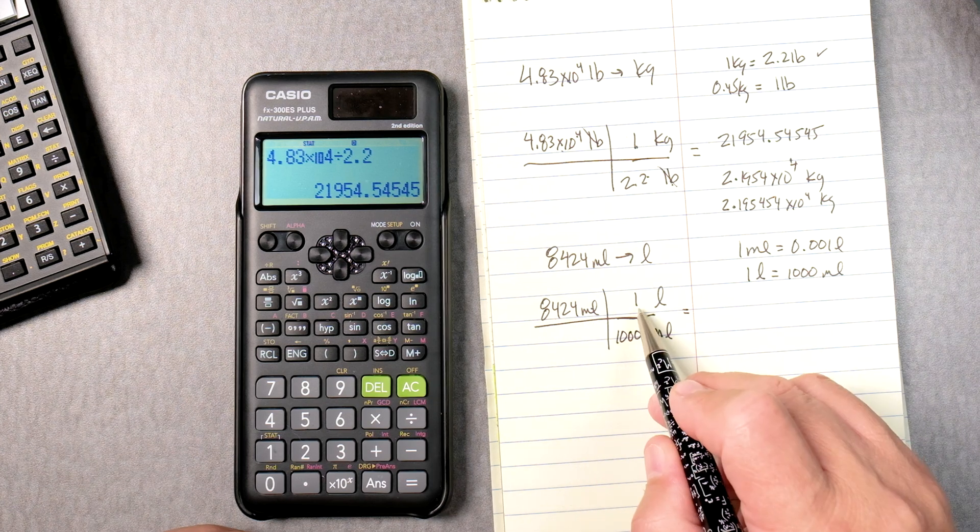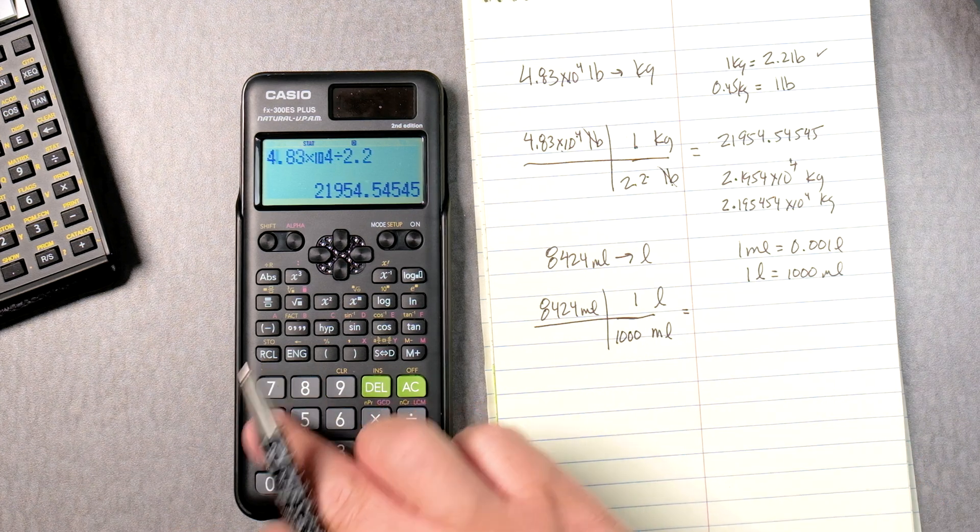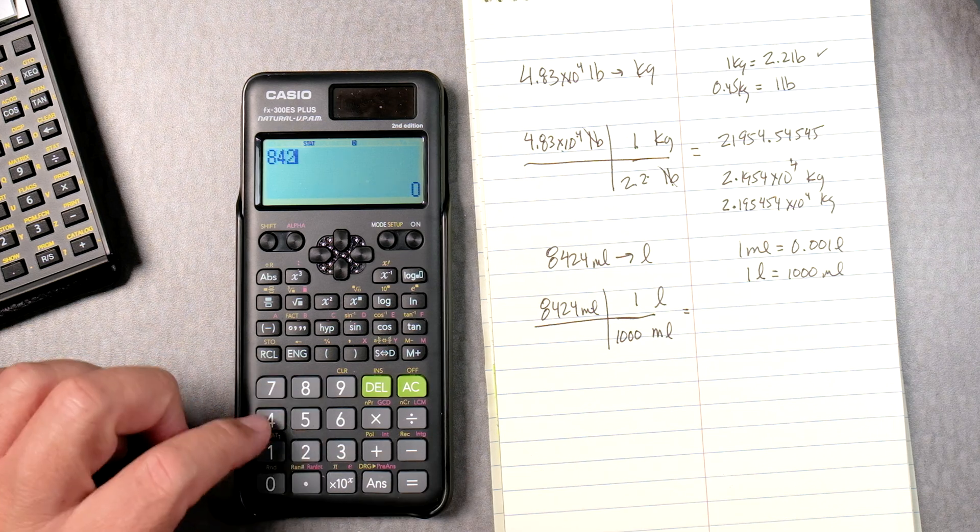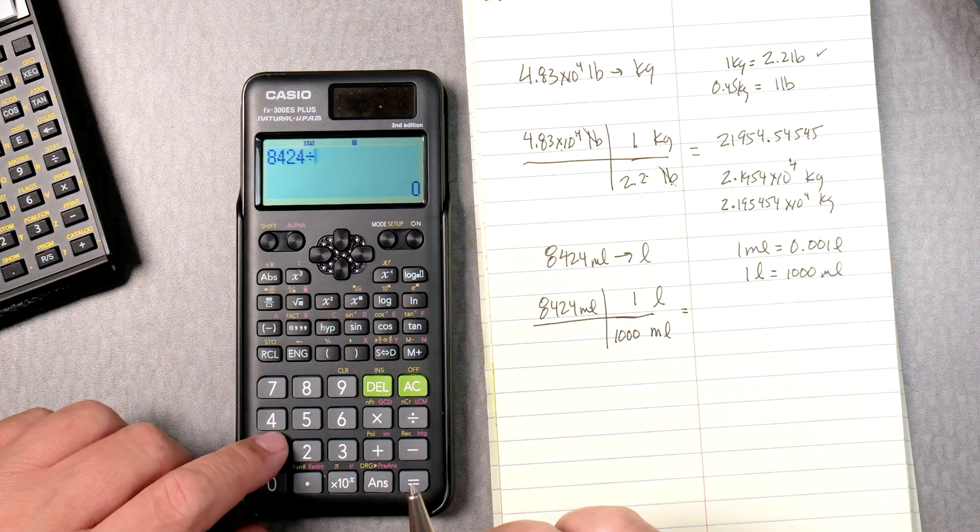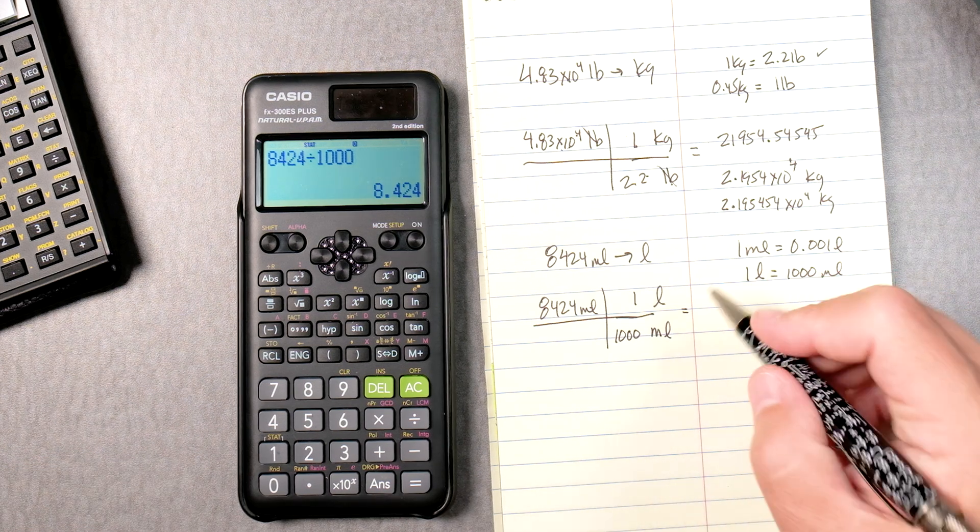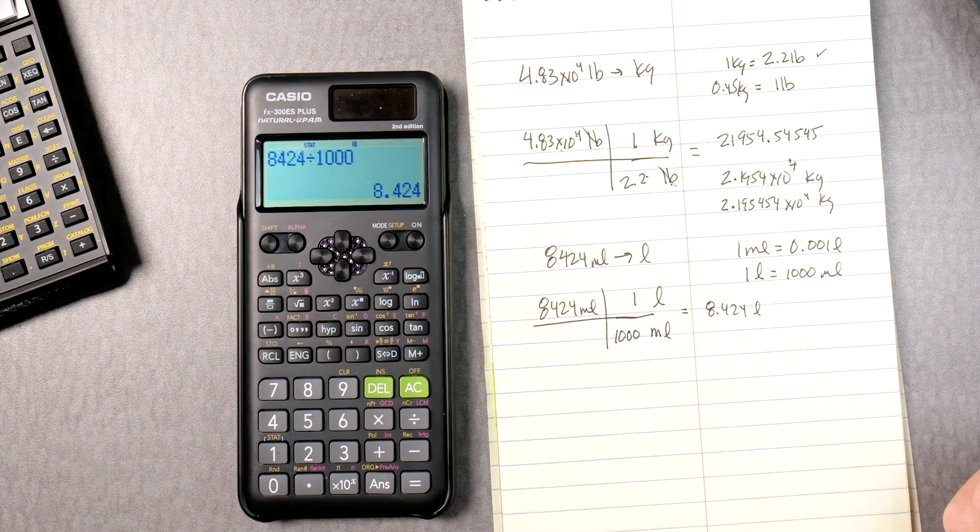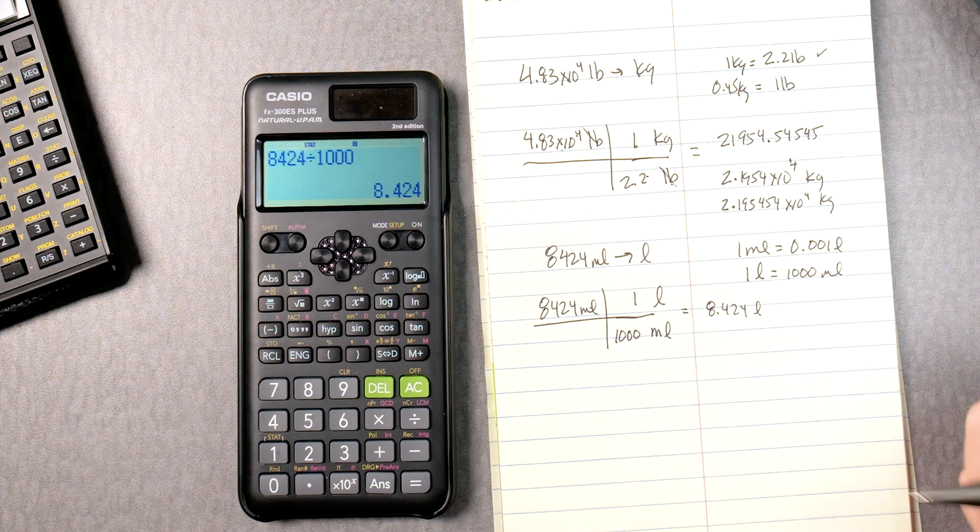8,424 times 1 divided by 1,000. So, that's 8,424 divided by 1,000. That's going to give you 8.424 liters. Perfect.